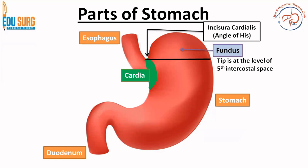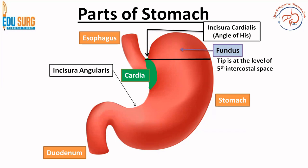Many times that is why the patient may have bloating due to gaseous distension of the stomach but that is mimicking a cardiac event, because the tip of the stomach or the fundus is at the level of the fifth intercostal space. Now just like incisura cardia at the upper end, there is incisura angularis which you can see on the lesser curve.